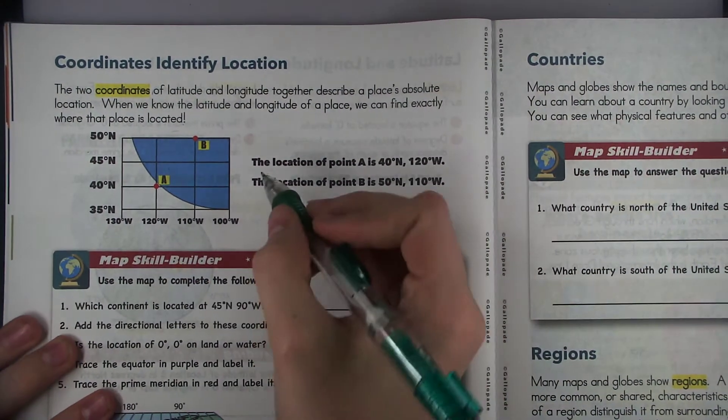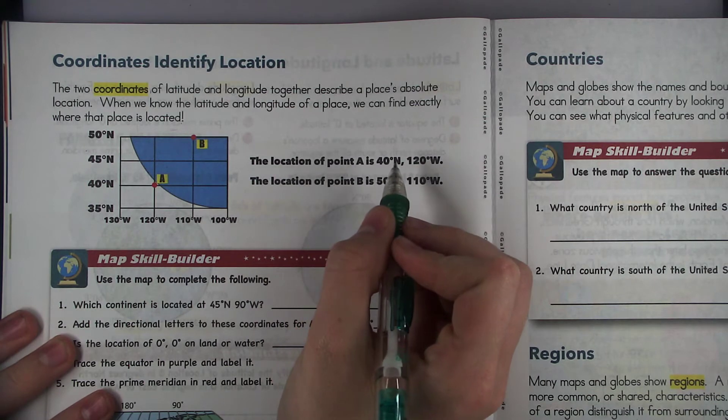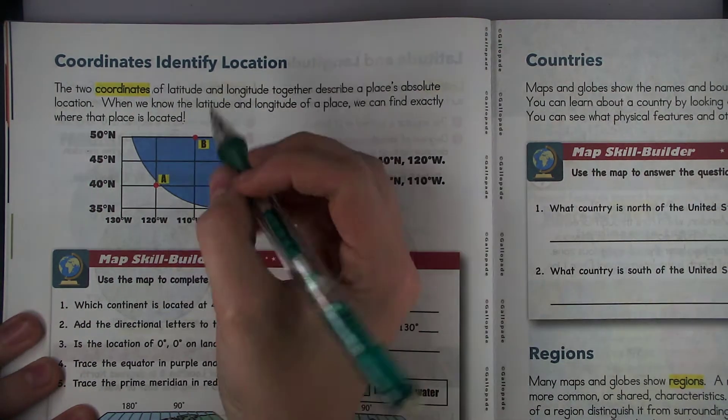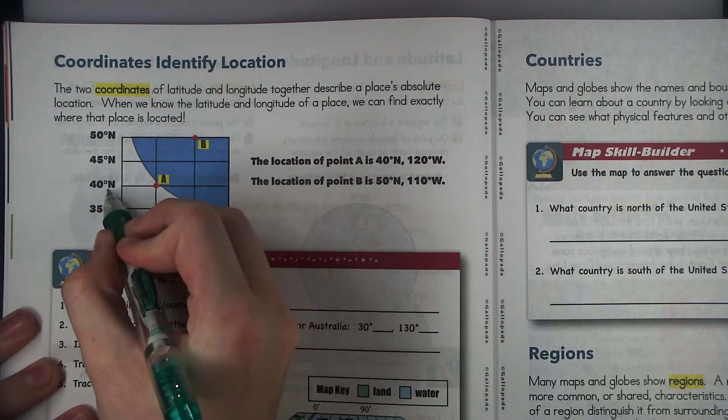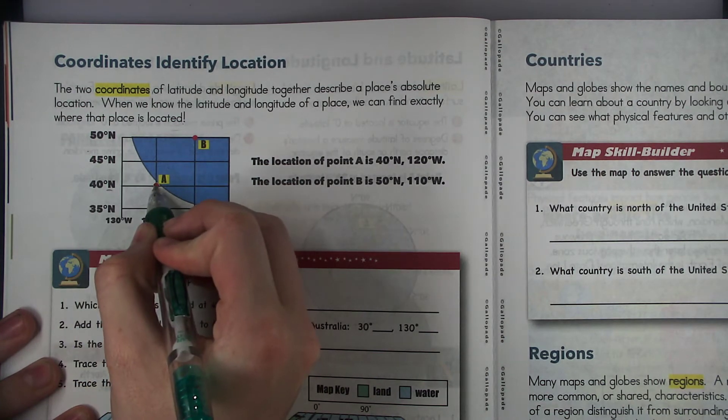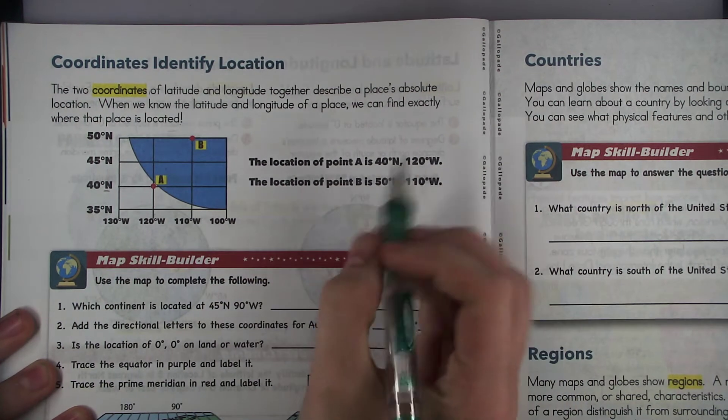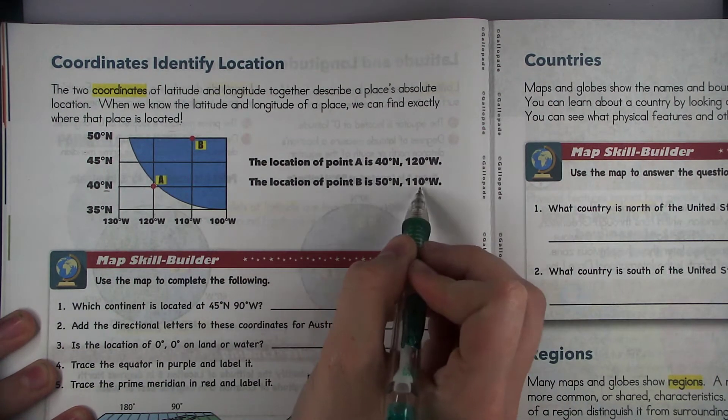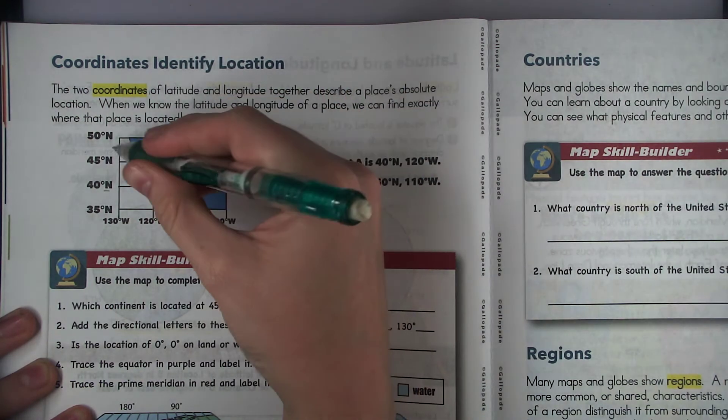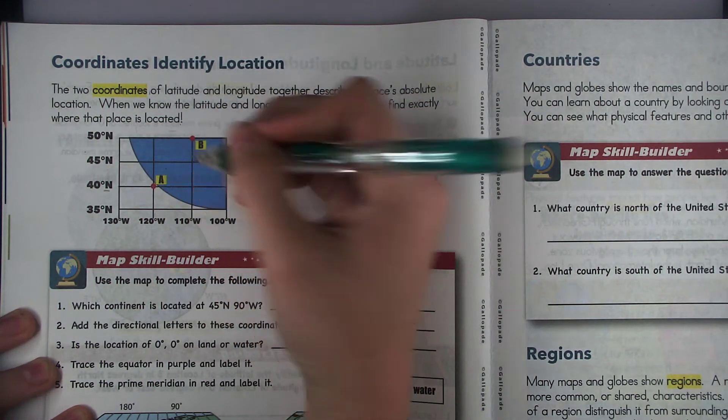So if you look right here it says the location of point A is 40 degrees north 120 degrees west. So look at point A. For north it's 40 degrees because it's right on that line and for west it's 120 degrees. And then the point B is 50 degrees north, 110 degrees west, 50 degrees north, 110 degrees west.